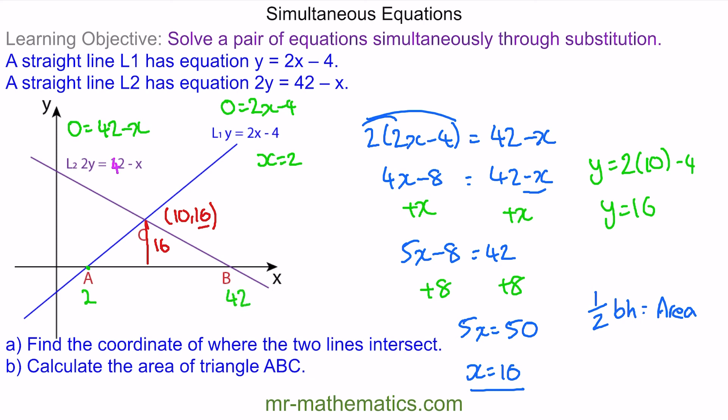So the base of our triangle is the difference between these two x values, which is 40. So now we can work out the area, which is one half of the base multiplied by the height, which gives us an area of 320 units squared.